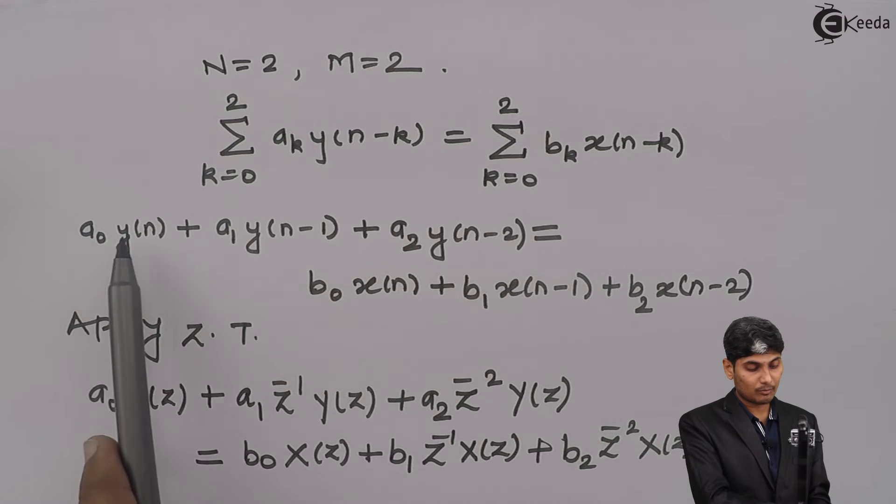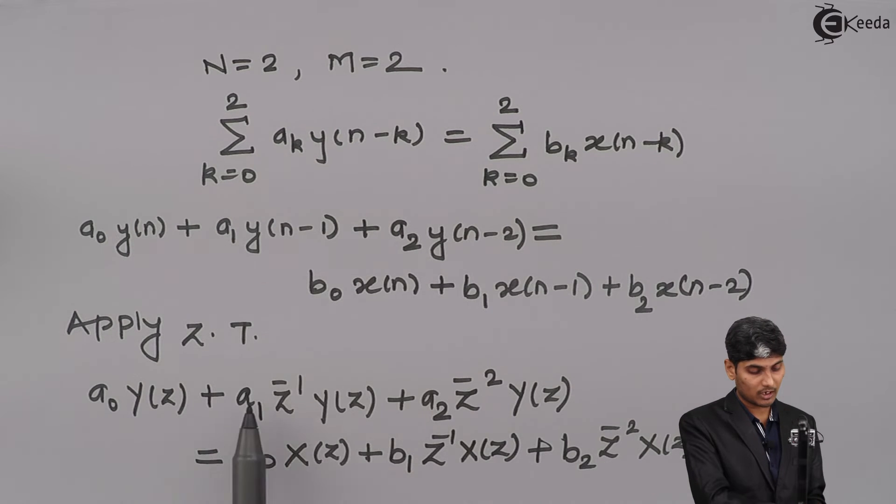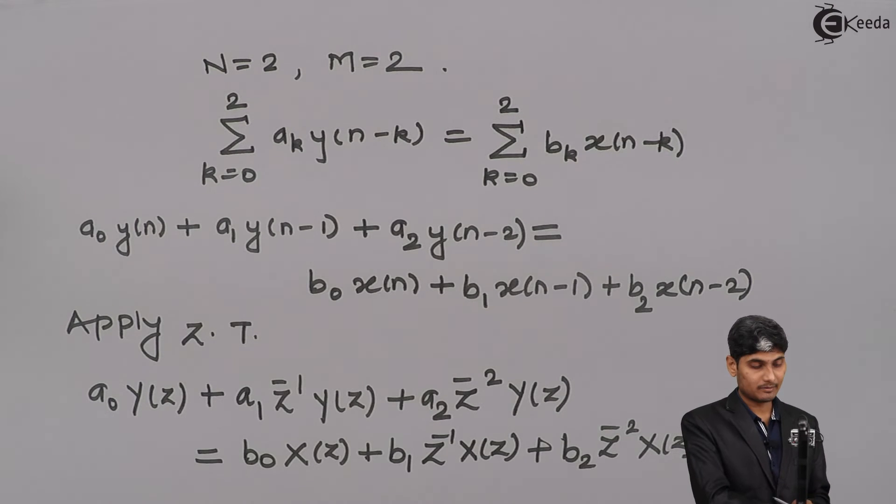Scaling property says that you have to bring out the constants. So, I bring out the constants. And linearity property says that you have to add them individually. So, we have added them.